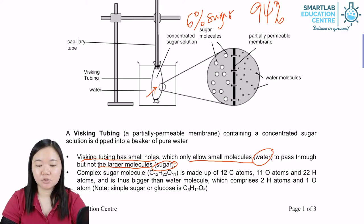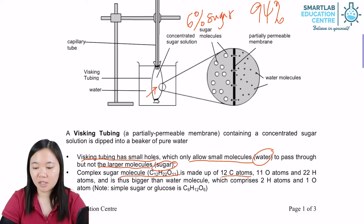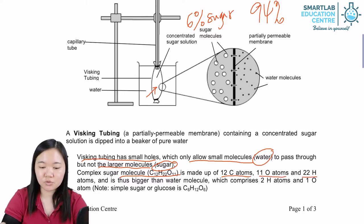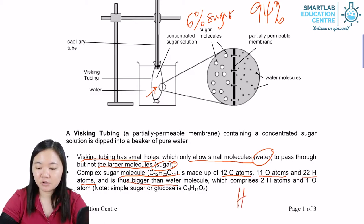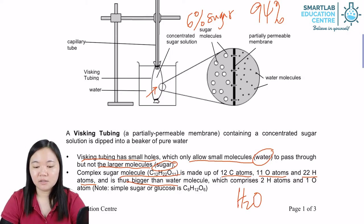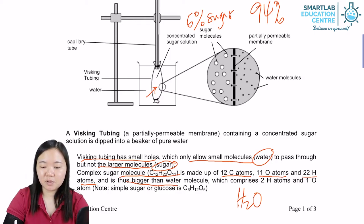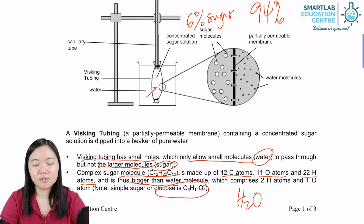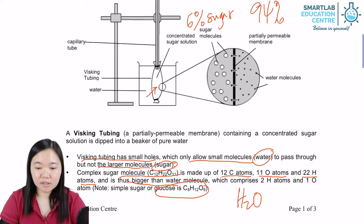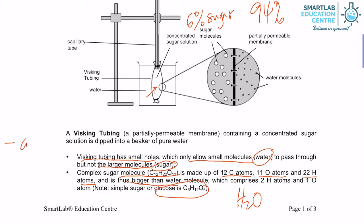A complex sugar is normally made out of 12 carbon atoms, 11 oxygen atoms, and 22 hydrogen atoms, making it bigger than water, which is H₂O. Please take note that simple sugars like glucose can pass through the partially permeable membrane, but complex sugar cannot — it is too large to pass through.